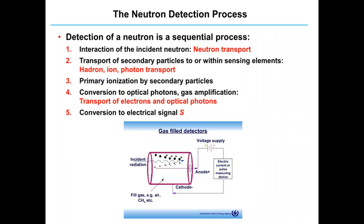The neutron detection process consists of five sequential steps. The first step is the interaction of the incident neutron — that is, neutron transport. We make the neutron interact with a particular kind of material. Those materials should have larger cross-sections for thermal neutrons and should have the capability of producing charged nuclei. In the second step, we carry out the transport of secondary particles — those particles produced due to the interactions of the neutron beam — within the sensing element.